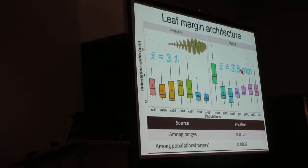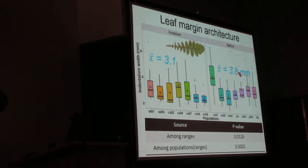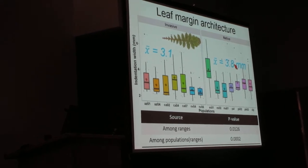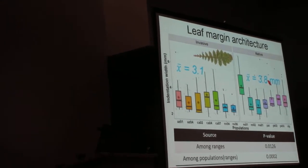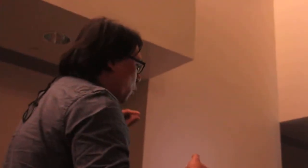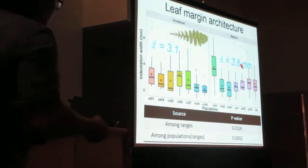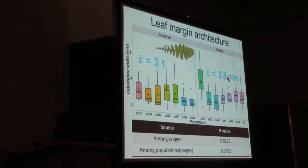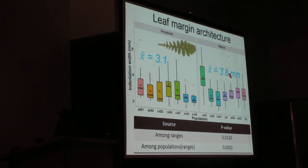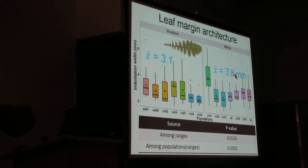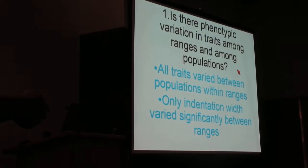Interestingly, I found differences in indentation width. I measured a set of leaf traits, leaf margin traits, and I found that the width of the indentation, these little iterations on the leaf, are much more wider in the native range compared to the invasive range. I did find significant differences between the two ranges.